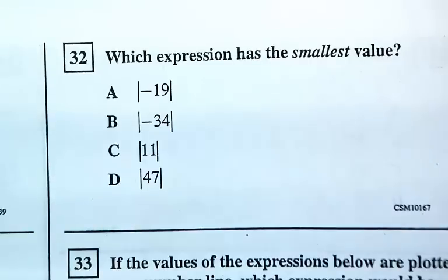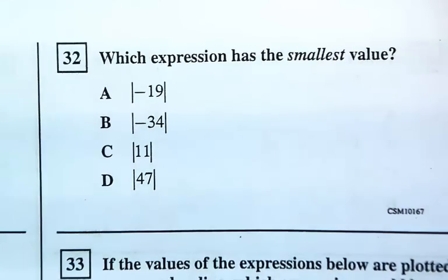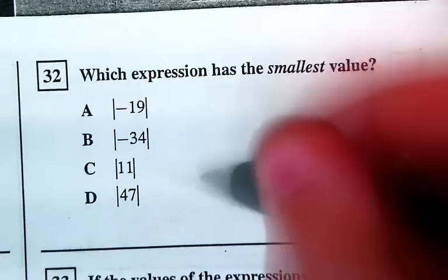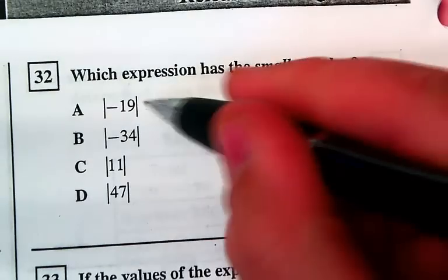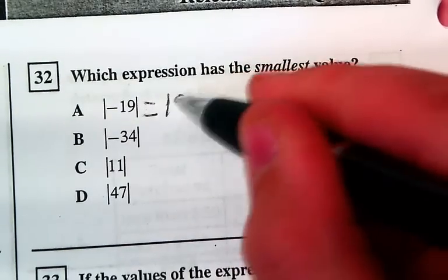This is Tyrone of period 4, and we're showing you number 32. The absolute value of negative 19 is 19, because it's 19 spaces away from 0.